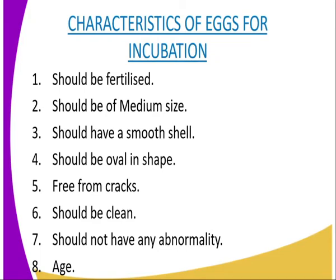We have the characteristics for eggs which are meant for incubation. Number one, they should be fertilized. Number two, they should be of medium size — they are not supposed to be big or small in size, but medium. Number three, they should have a smooth shell — the shell should not be rough. Number four, they should be oval in shape, and eggs which are oval in shape have a high level of hatchability.